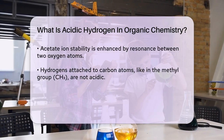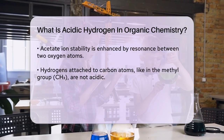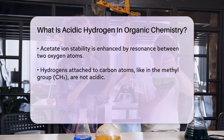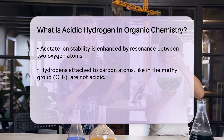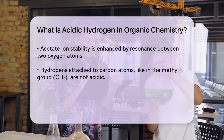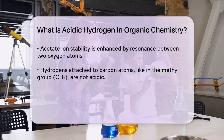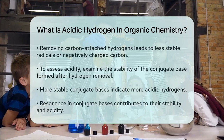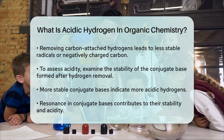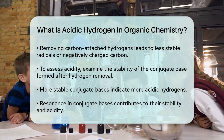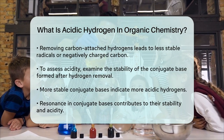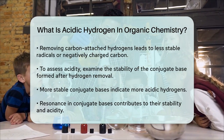To determine which hydrogen in a molecule is the most acidic, you need to look at the stability of the conjugate base formed after the hydrogen is removed. The more stable the conjugate base, the more acidic the hydrogen. For instance, if removing a hydrogen results in a conjugate base that can delocalize its negative charge through resonance, that hydrogen is more likely to be acidic.